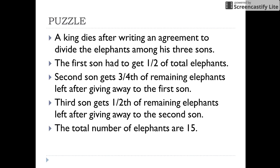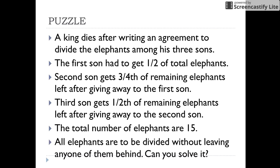The total number of elephants that the king had were 15. Remember, all the elephants are to be divided without leaving any of the elephants. That is, you have to divide all these 15 elephants among the three sons according to the will. So, can you find out how many elephants each son gets?